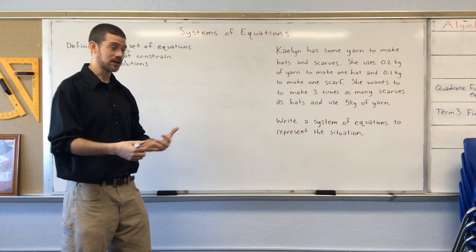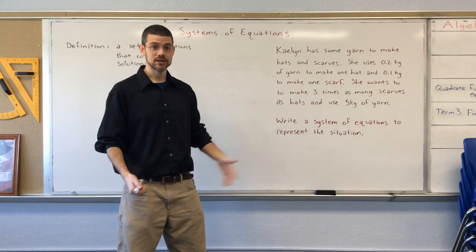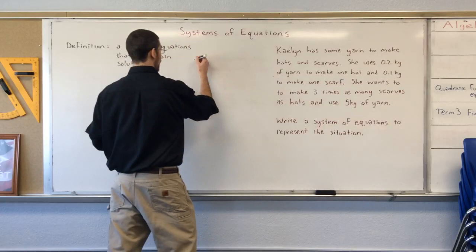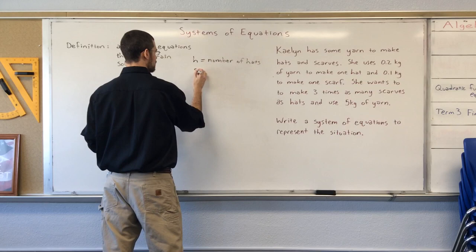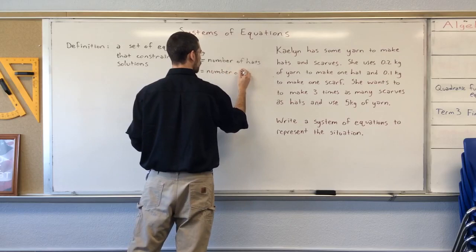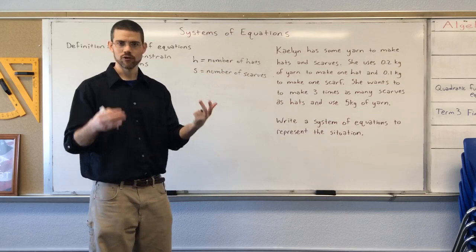Again, a system of equations is constraints, equations that represent the situation. In this case, we need to have some variables. We're making hats and scarves. We don't know how many of them. That's probably what Kalen is going to end up finding out using this system of equations. So, we need to define our variables. We'll use H and we'll call H the number of hats and we'll call S the number of scarves. You could use any variable you want, but it's pretty typical to use the first letter of whatever it is you're talking about. Hats and scarves.